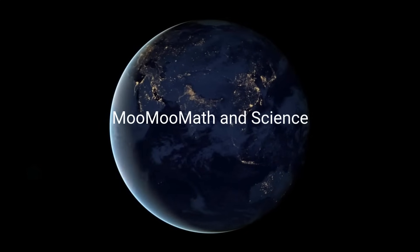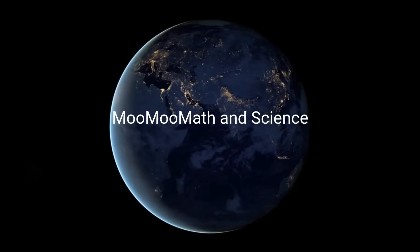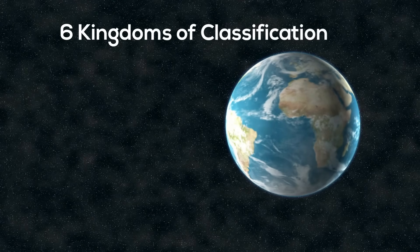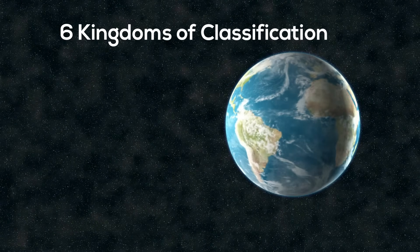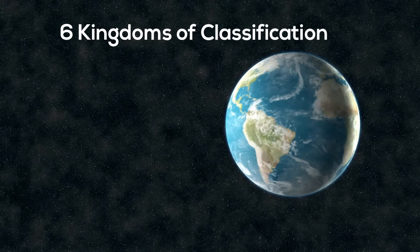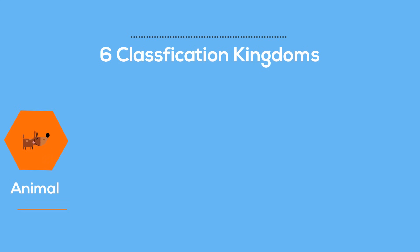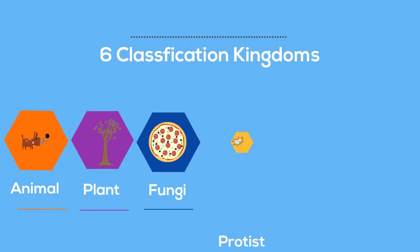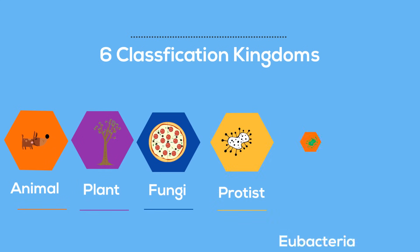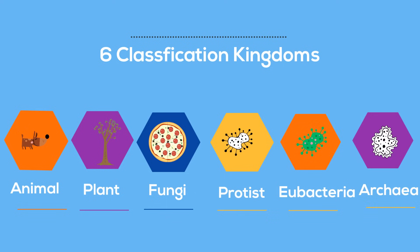Welcome to Moo Moo Math and Science. In this video I'd like to talk about the six kingdoms of classification. They include the animal kingdom, the plant, fungi, protists, bacteria, and archaea.